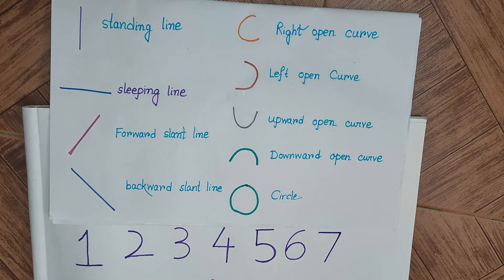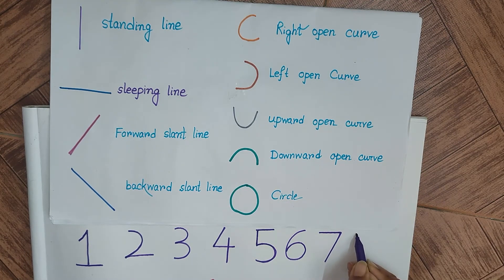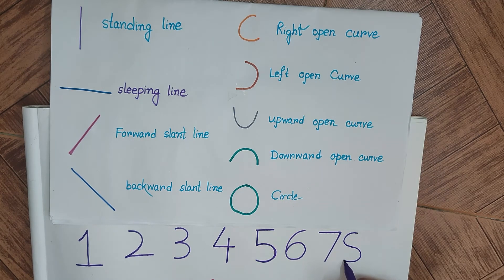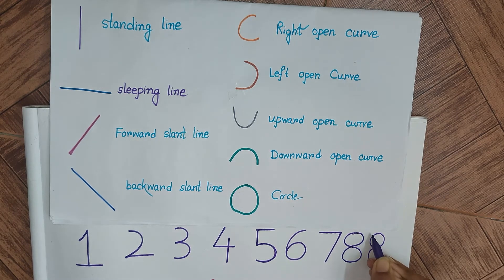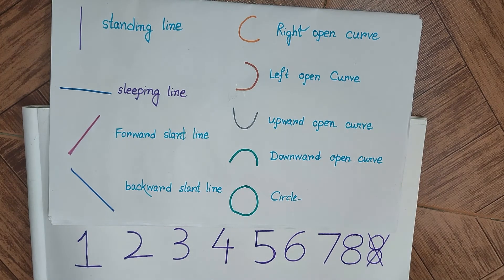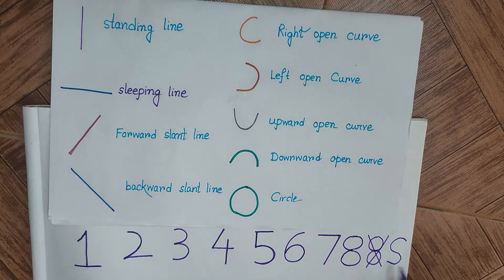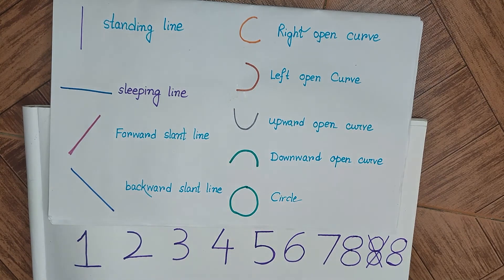Let us see how we will form number 8. There are a few methods but only one is the correct one. First, we will draw a right open curve followed by a left open curve from the end of the right open curve. Then again a right open curve followed by a left open curve, which gives us 8. We could have used two circles joined from the middle to form 8, but this is the wrong method. Another method for children is to write an English alphabet S, a straight S and a reverse S, joining them from end to end, which also gives us 8. So these are a couple of methods you can select for forming 8.